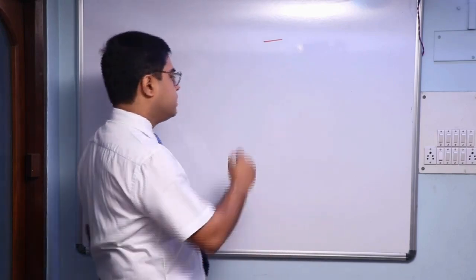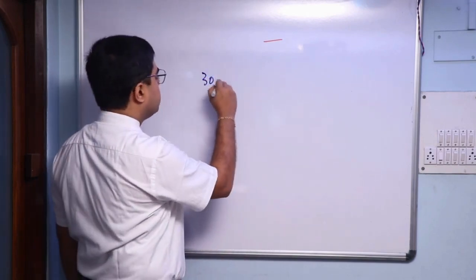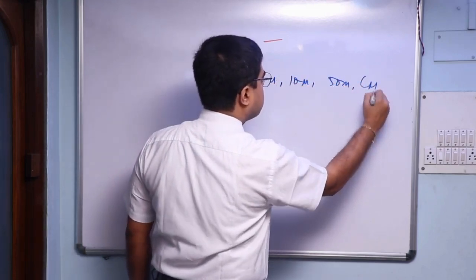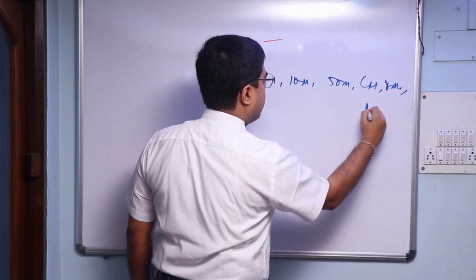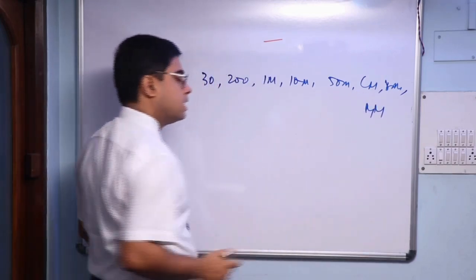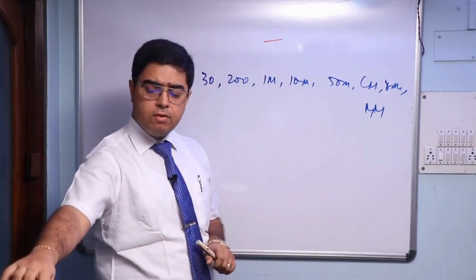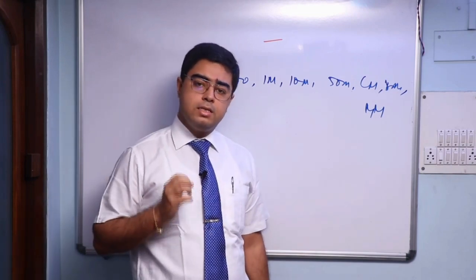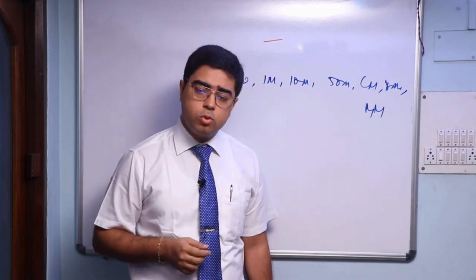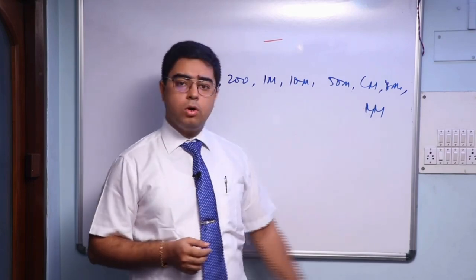Kent has given many references over his writings about the series of potencies. He mentions about 30, 200, 1M, 10M, 50M, CM, DM, and MM — eight potencies in the C scale. Kent has given various references that these eight potencies you'll need in your practice. Obviously, in many of the pharmacies, DM and MM potencies are not available in today's world, but you can definitely work up to CM potencies.